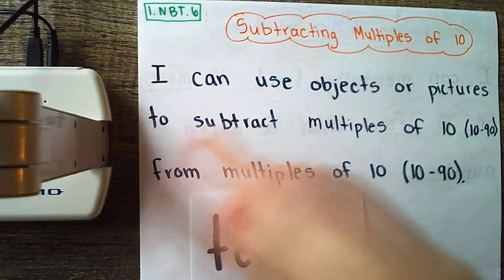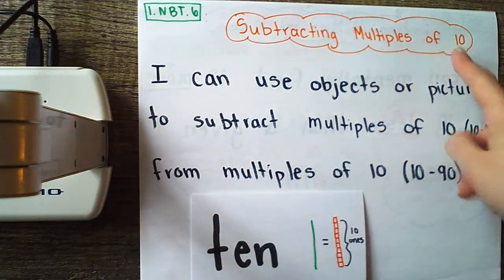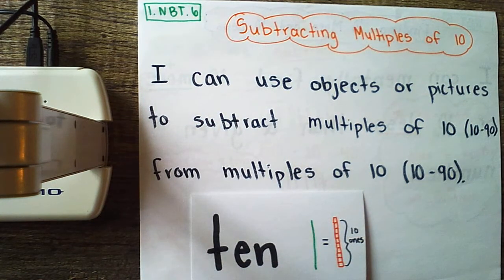With 1NBT6 we're subtracting multiples of 10. This is going to be pretty easy for us for a few reasons. One, we have done this before in the classroom before we went to teleschool. And two, because we've been doing so much work with objects and pictures and beginning to do some math in our heads mentally, this is going to start to be really easy for us.